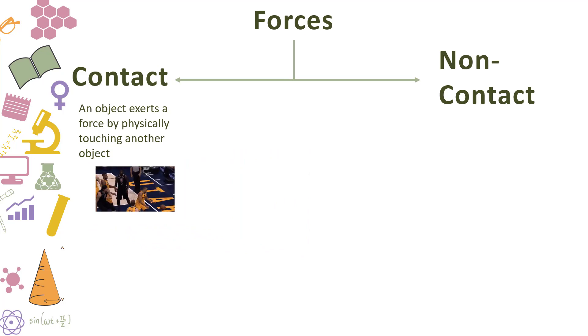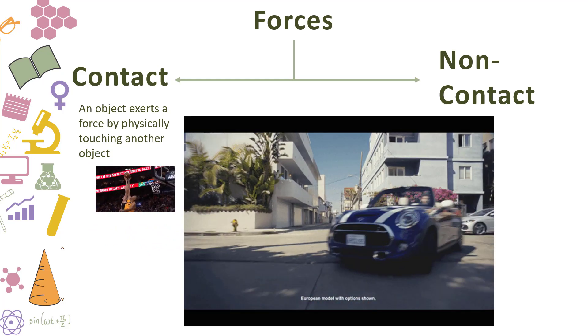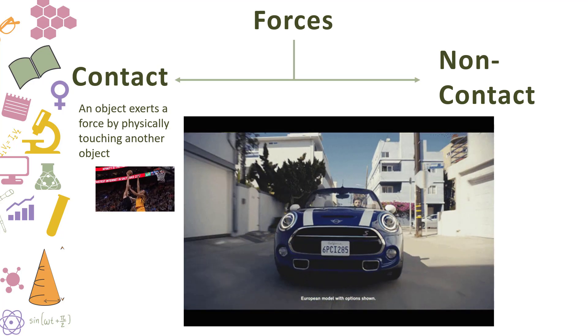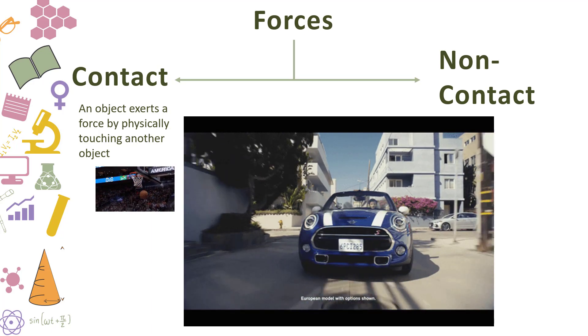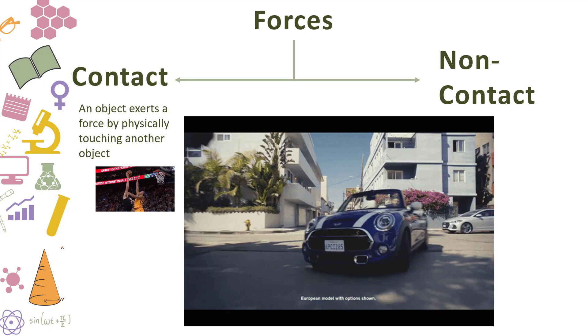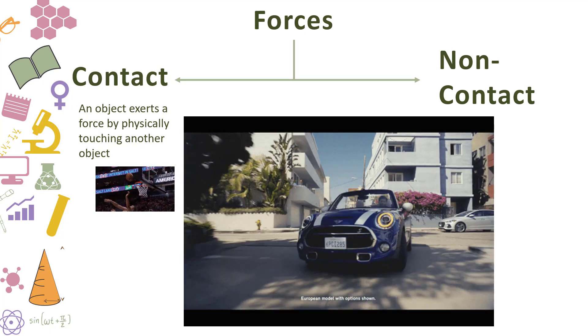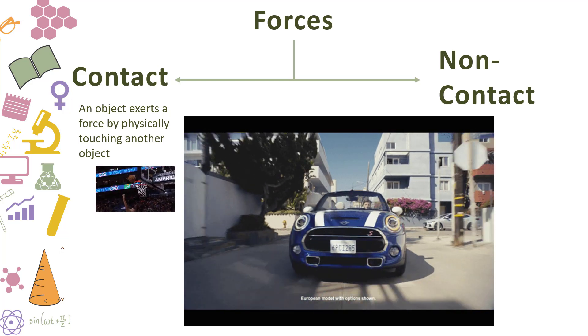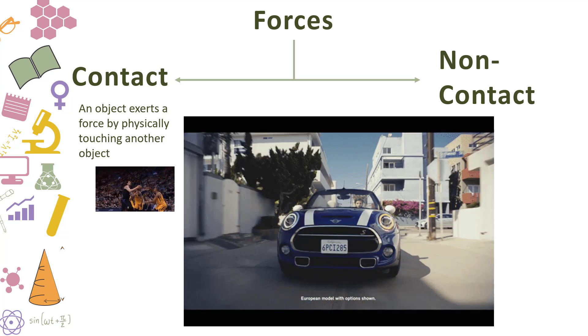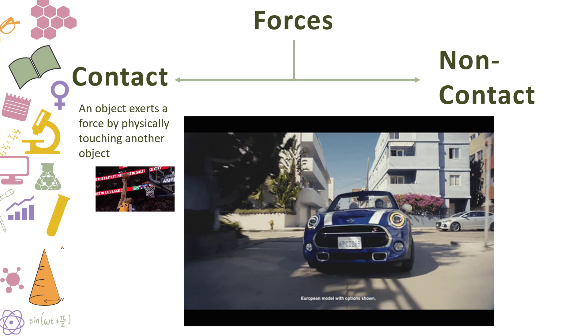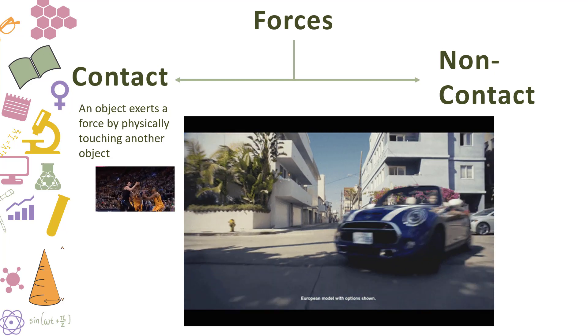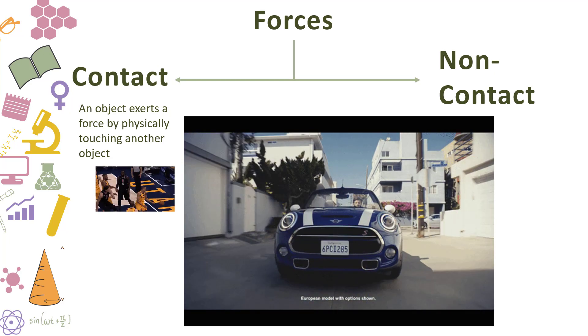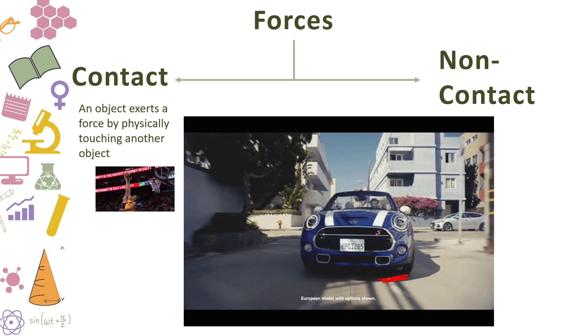Another example of a contact force is friction. Now friction occurs when an object is rolling or moving or sliding across another surface and that surface attempts to slow down that object. Now friction can be quite useful. For the case of this car, for instance, friction is allowing the car to turn around this corner. You could imagine that if the ground is made out of ice, there will be very little friction between the car and the ground and the car might just slide away. So friction can be quite beneficial to us and it is also a contact force because it requires one object to be physically touching another. In this case, the wheels of the car are touching the ground itself.